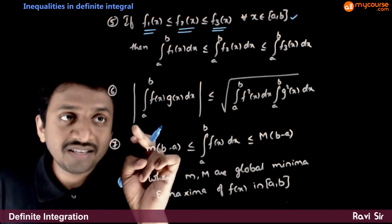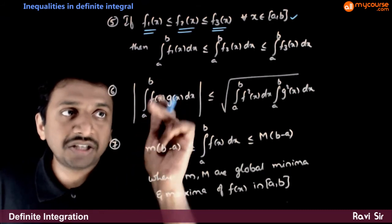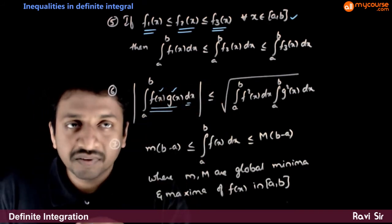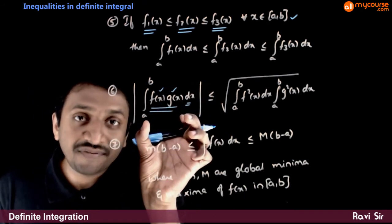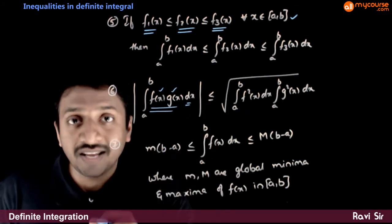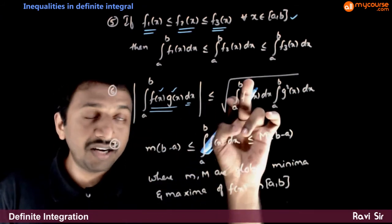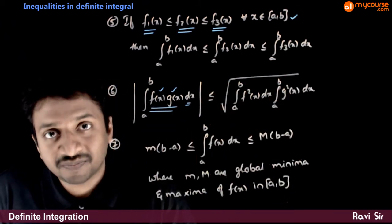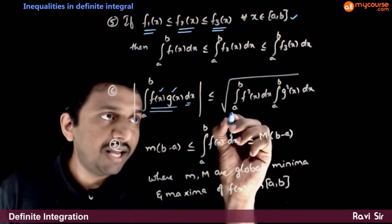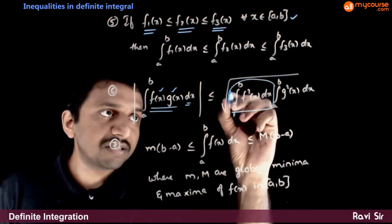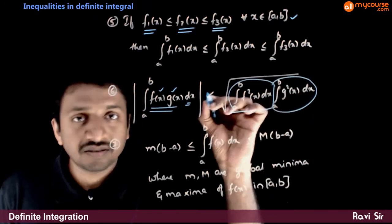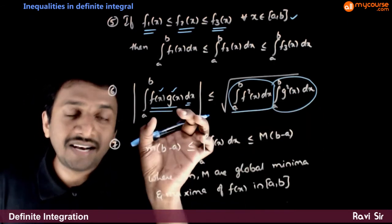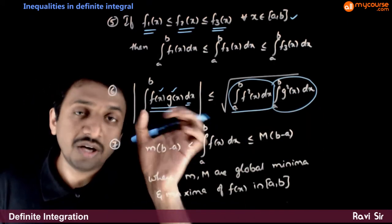The next property is: the mod of the integration from a to b of f(x)·g(x)dx — a product of two functions — will always be less than or equal to the square root of the integration from a to b of f²(x)dx times the integration from a to b of g²(x)dx. So if you take the integration of f²(x) and the integration of g²(x), multiply them, and take the square root, this will always be greater than the direct product integration mod.